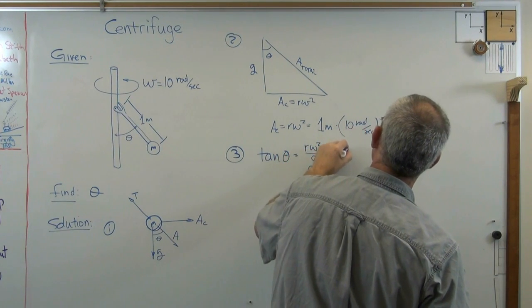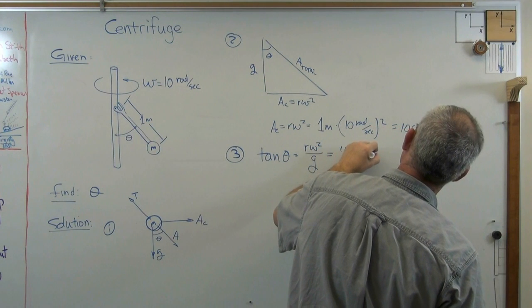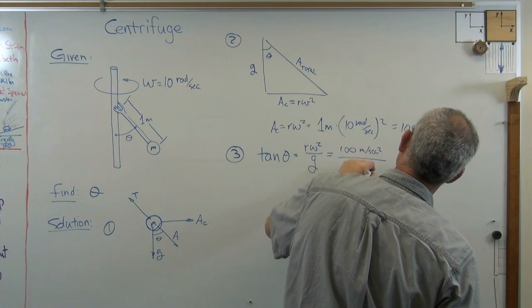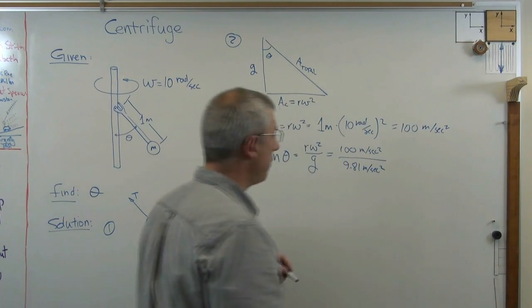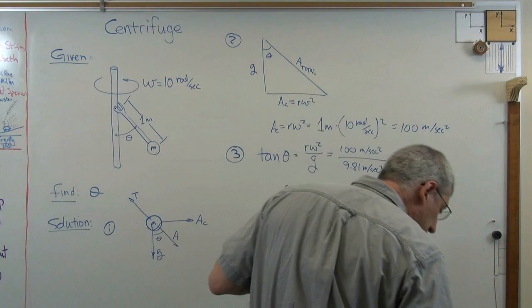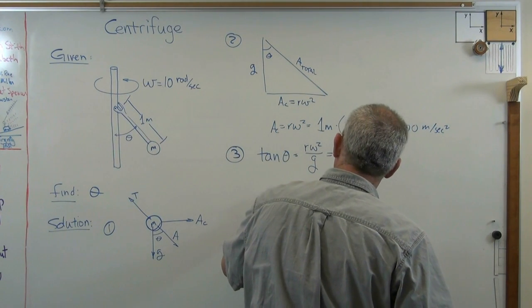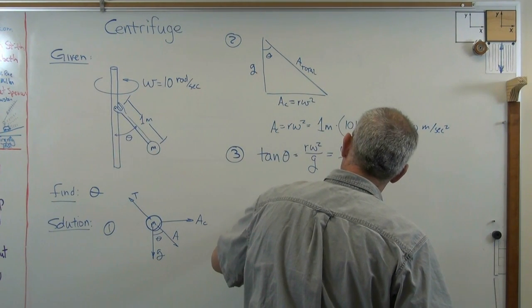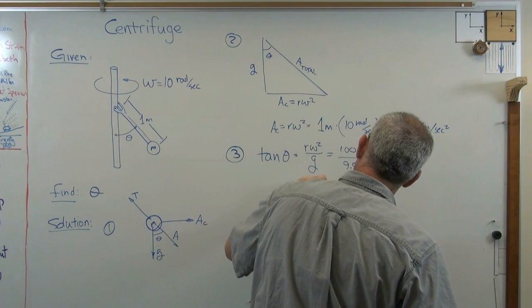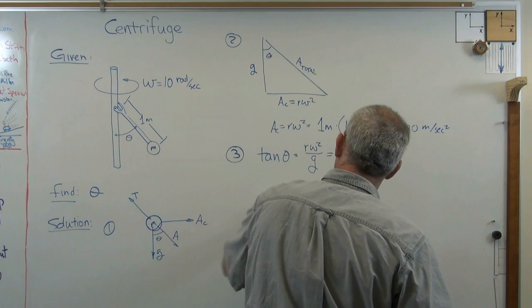And that's going to be 100 meters per second squared over 9.81 meters per second squared. And if I work that out, what I get is theta equals, make sure I use my cheat sheet here, basically 84.4 degrees, 84.397 degrees. That's a lot.